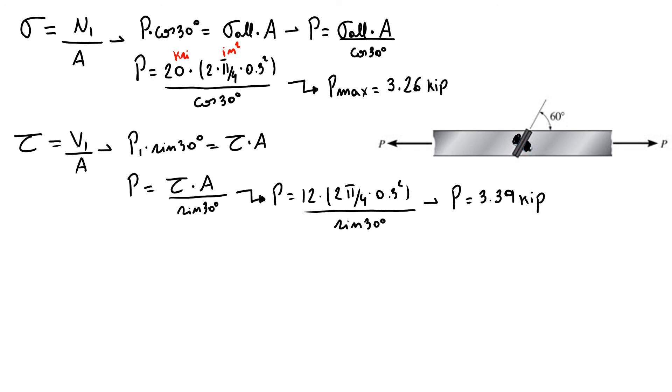So between this one here and this one here, you're gonna choose number one because P1 is smaller than P2. Because if we use P2, we're gonna exceed the normal stress. So this is the last problem of homework 6.